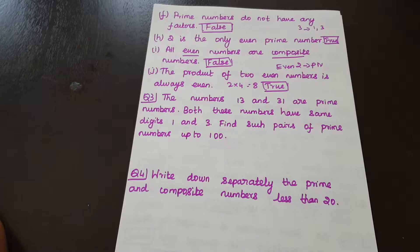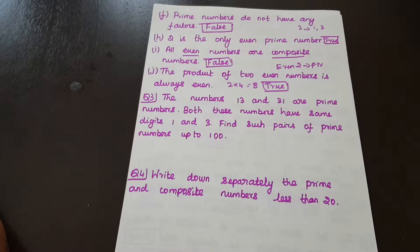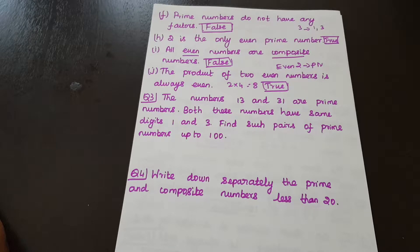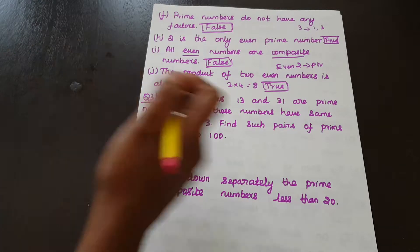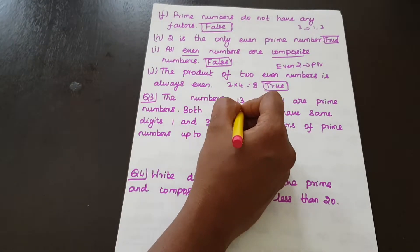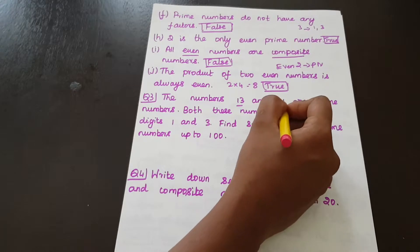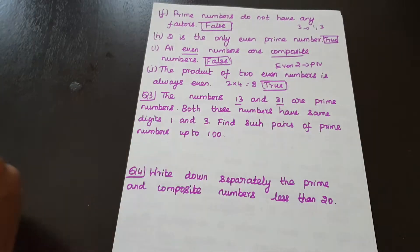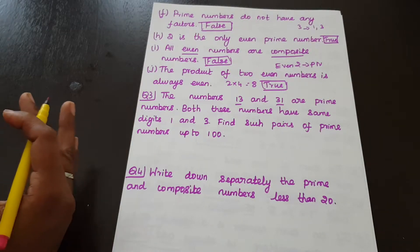Question Number 3: The numbers 13 and 31 are prime numbers. Both these numbers have the same digits 1 and 3. Find such pairs of prime numbers up to 100.